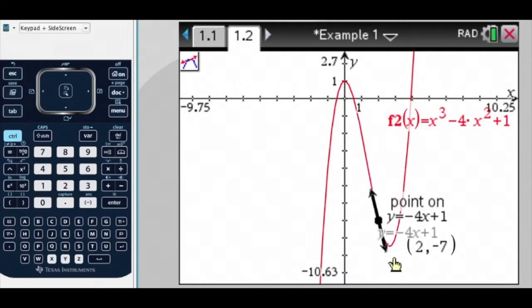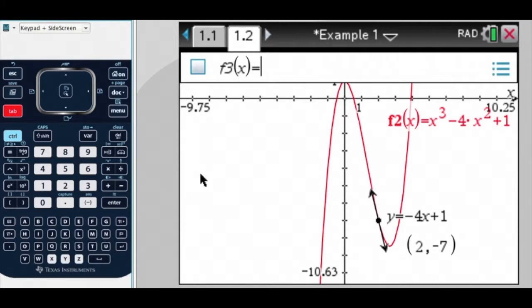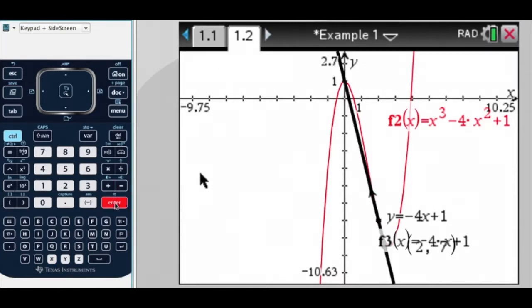But as we can see, it's not a very long tangent. So what I'm going to do now, by pressing Tab, I'm going to actually graph the line negative 4x plus 1. And there's my longer tangent there.